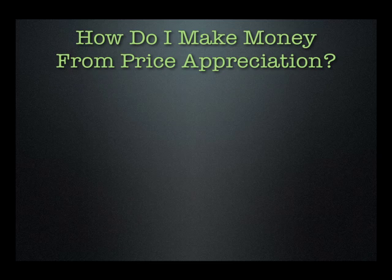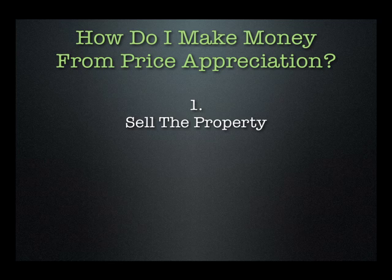How do you actually realize the profit from appreciation? There are two ways. Number one is to sell the property — you bought it for X, it's now worth Y, and you sell it to get that money out. That's the fix-and-flip strategy. One problem with selling is that you'll face capital gains tax. The government looks at the difference between what you bought and sold for as a capital gain.